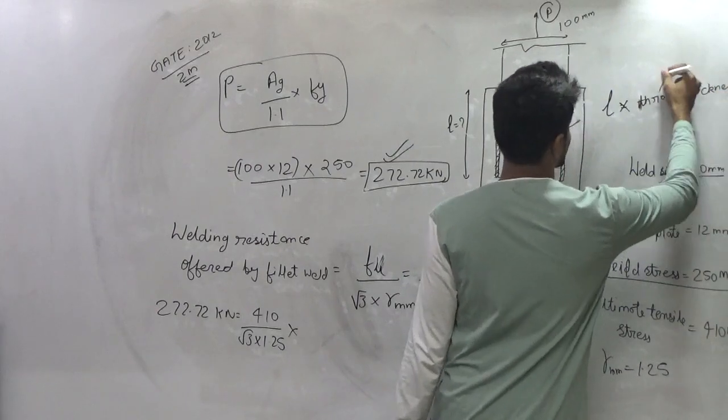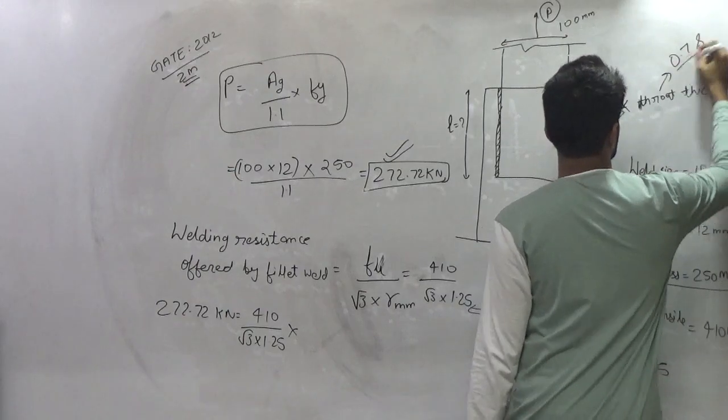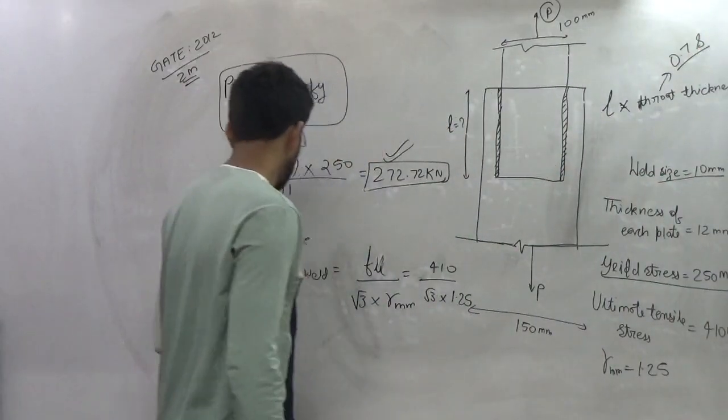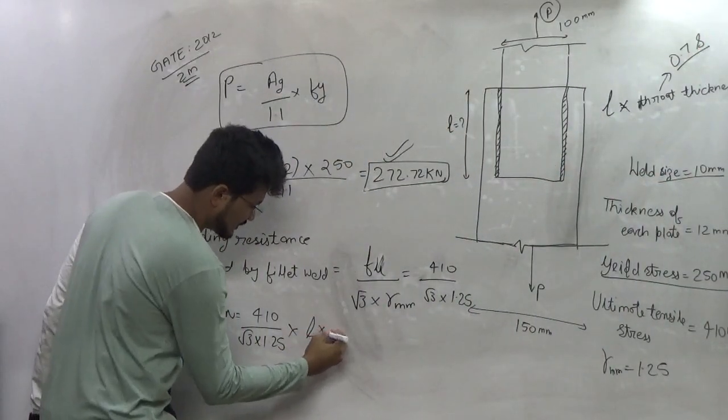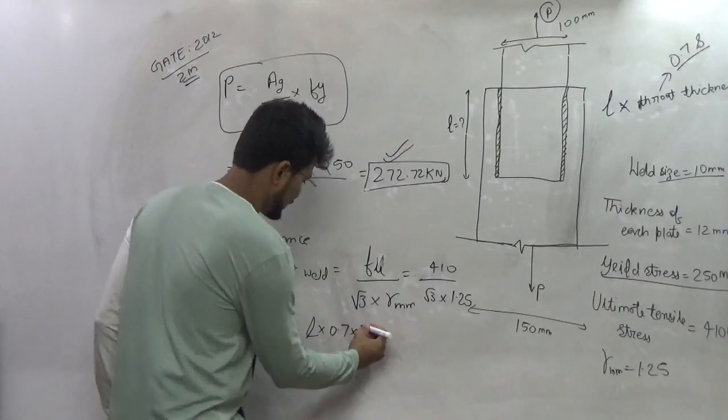So the throat thickness is given by 0.7 times the size of the weld. So length we have to find out multiplied by the 0.7 into the size of the weld is given as 10 mm.